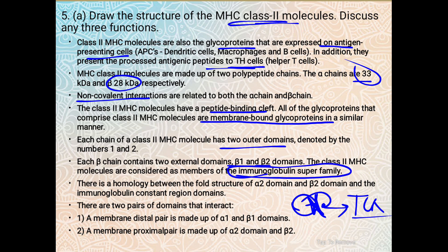The class 2 MHC molecules are considered members of the immunoglobulin superfamily. We also call them the immunoglobulin antibody family. There is a homology between the fold structure of the alpha 2 domain and beta 2 domain and the immunoglobulin constant region domain. That is why we call them the immunoglobulin superfamily.